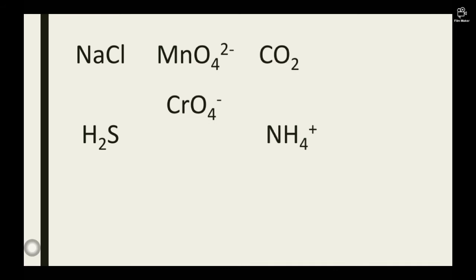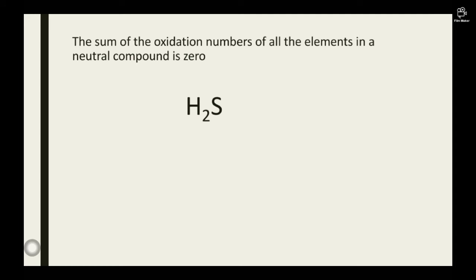Pause and look at this: NaCl, MnO4 2 minus, CO2, H2S, CrO4 minus, NH4 plus. Take your pen and kindly cross out the ones that are neutral compounds. The neutral compounds are NaCl, CO2, and H2S. All those compounds listed here have no charge on them. The ones that have charges are the charged ones: MnO4 2 minus, CrO4 minus, and NH4 plus are charged compounds but not neutral compounds.